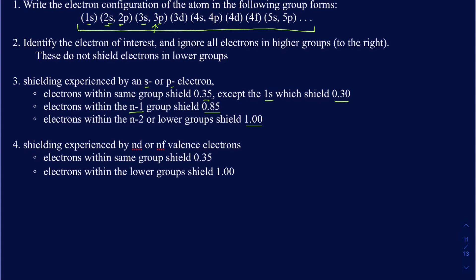For an electron in a d orbital, the rules are different: electrons in the same d group shield by 0.35 units each, and any electrons in lower groups — including 3p, 3s, 2p, 2s, and 1s — all shield by 1.0 unit each.